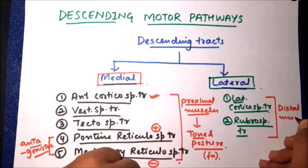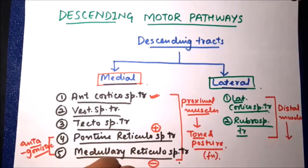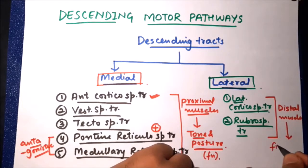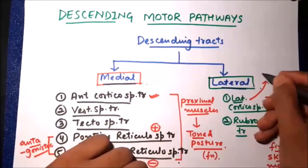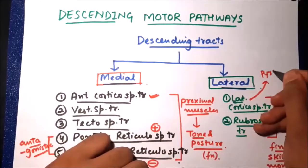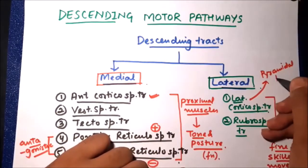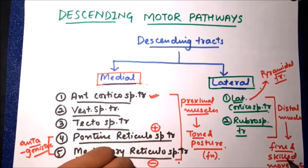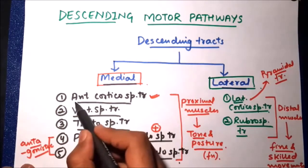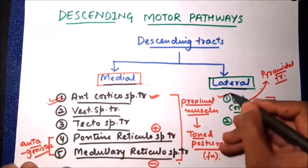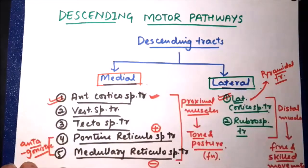These two lateral tracts differ from the medial descending pathways because they innervate distal muscles and their function is to control fine and skilled movements. Voluntary control of fine and skilled movements is the function of the lateral corticospinal tract and the rubrospinal tract. The lateral corticospinal tract is also called the pyramidal tract because its fibers form structures called pyramids in the medulla.